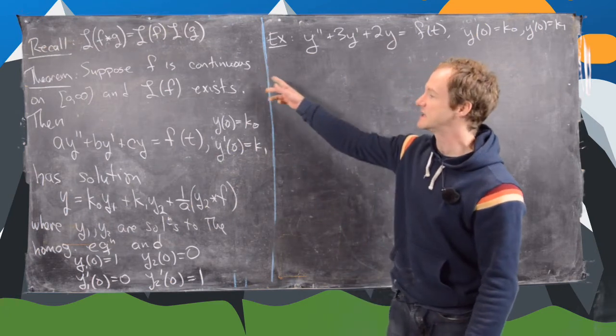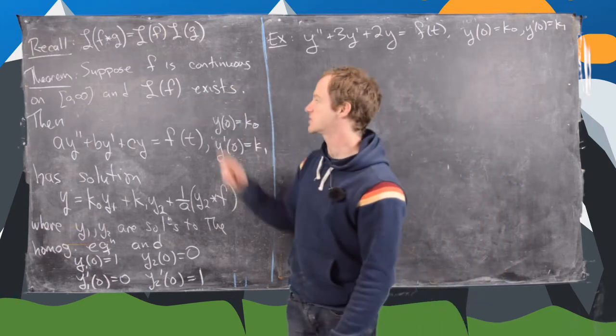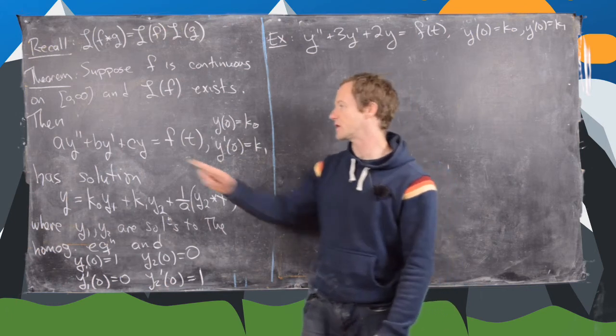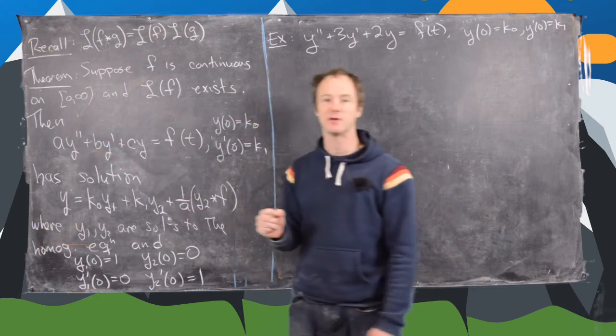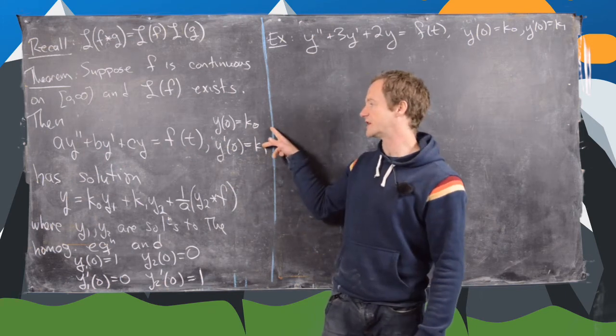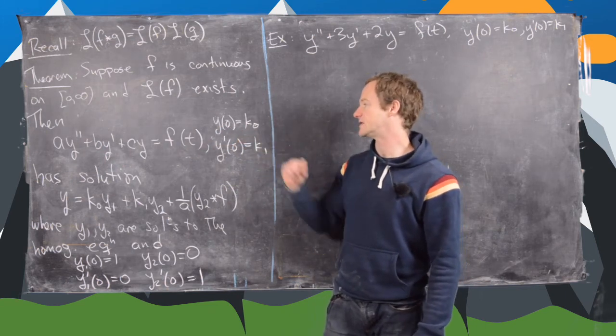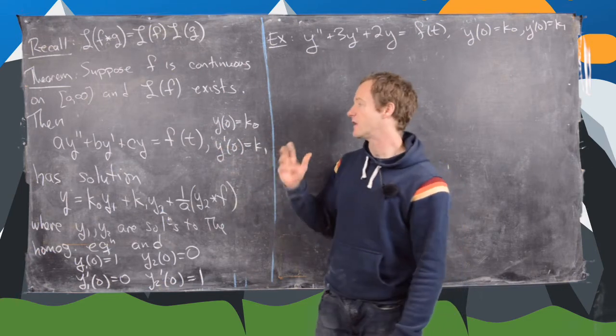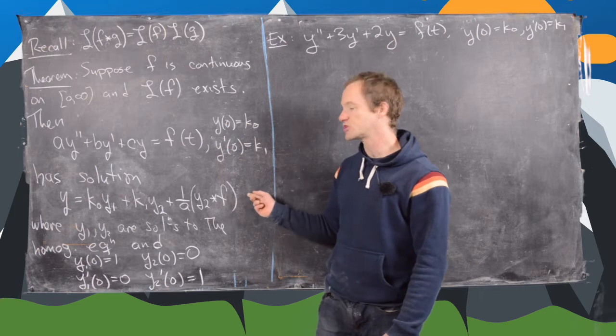If we've got a continuous function whose Laplace transform exists and we've got this second order non-homogeneous differential equation, a y double prime plus b y prime plus c y equals f of t, we've got these initial conditions: y evaluated at 0 is k0, y prime evaluated at 0 is k1, then we know a solution and the solution is of this form.